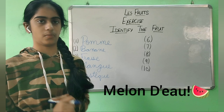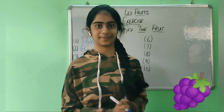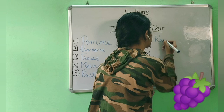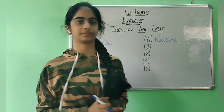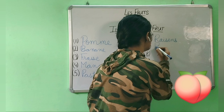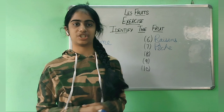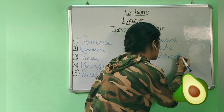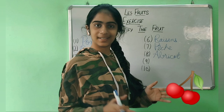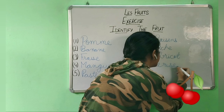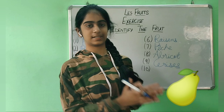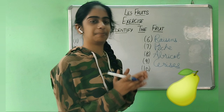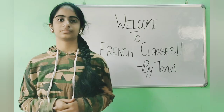The other name, as I told you, is melon d'eau, melon d'eau. Now what is this? These are the grapes, which are known as raisins, raisins. And what's this? It's the peach, which is pêche, pêche. Then what's this? Yes, it's the apricot, which is abricot, abricot. Then what's this? Yes, these are the cherries, which are known as cerises, cerises. And last but not least, what's this? Yes, it's the pear, which is poire, poire.